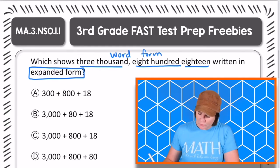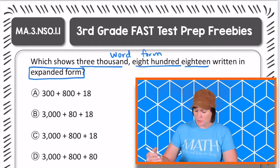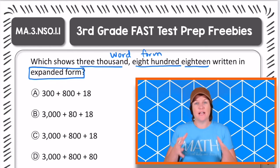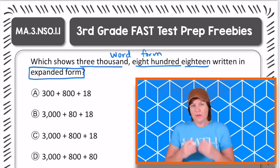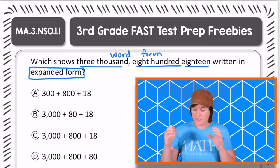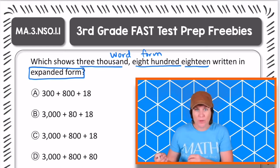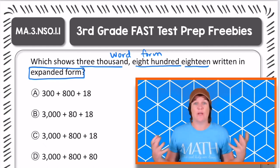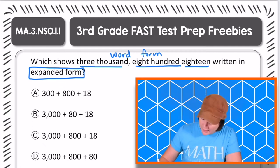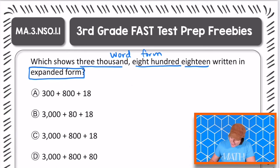We need to write it in expanded form, and you can see choices A, B, C, and D kind of imitate what expanded form looks like. The first step I'm going to take with this is to take it from word form and put it into standard form. First, standard form is the regular way that we write numbers. So 3,818.